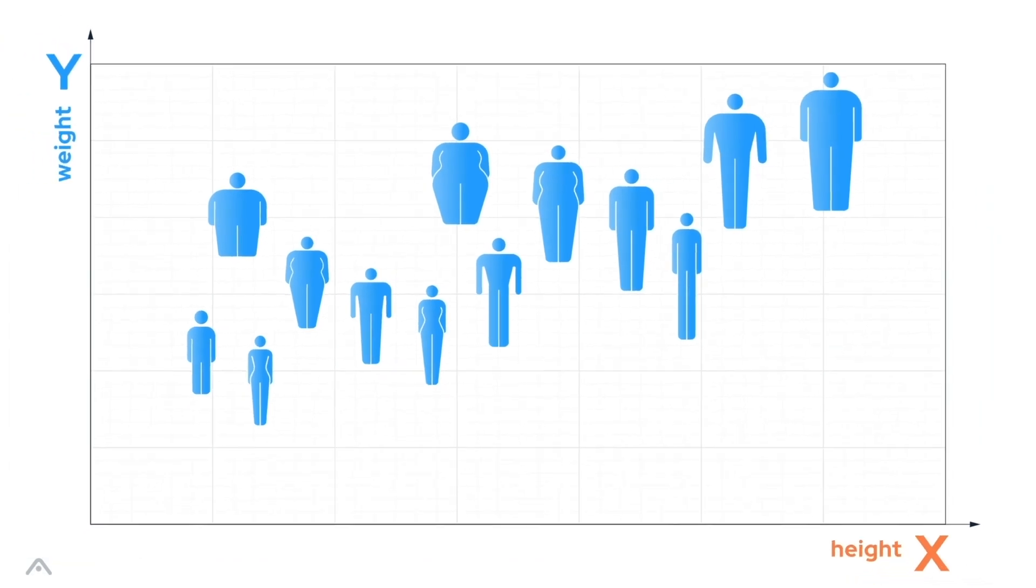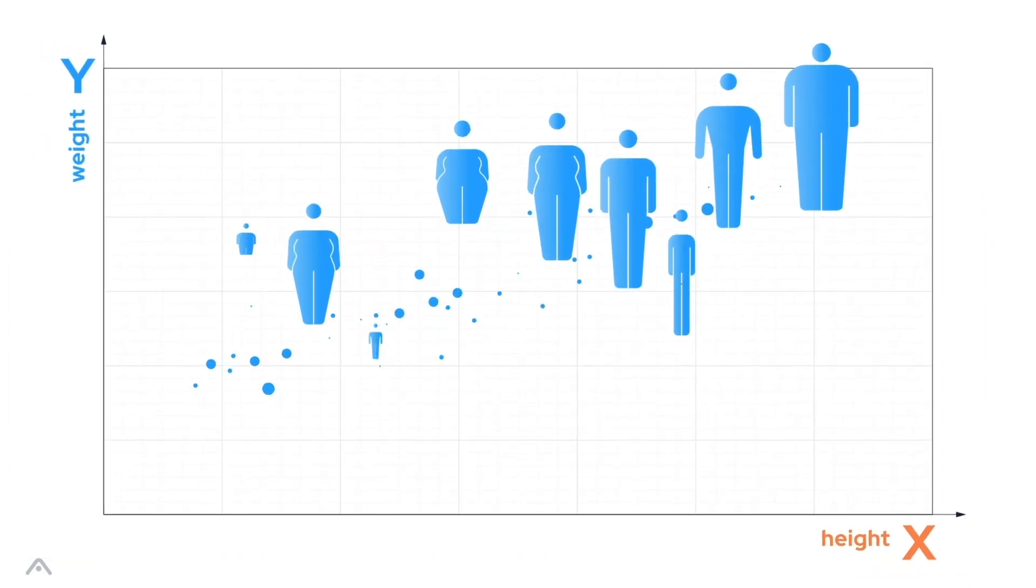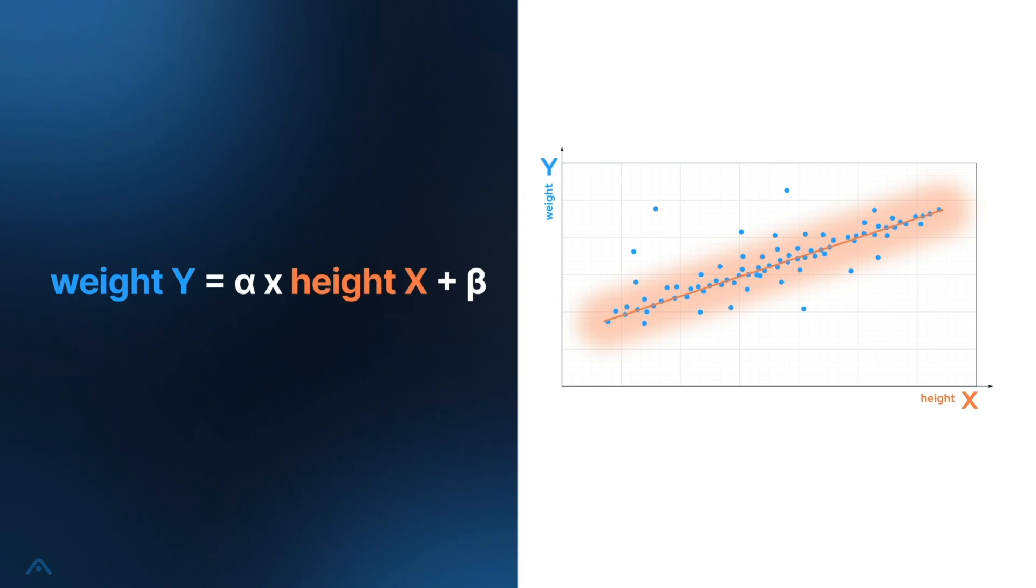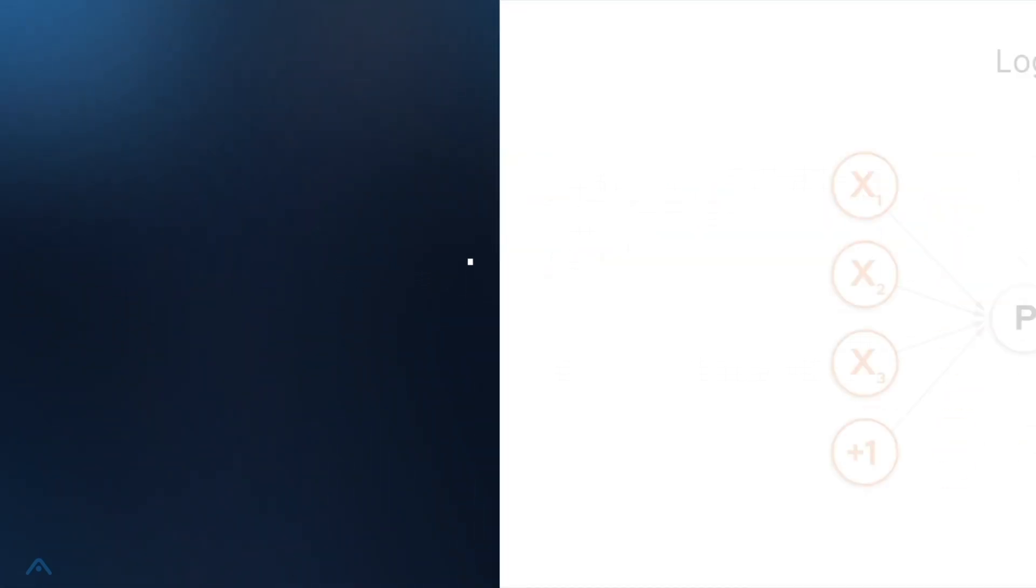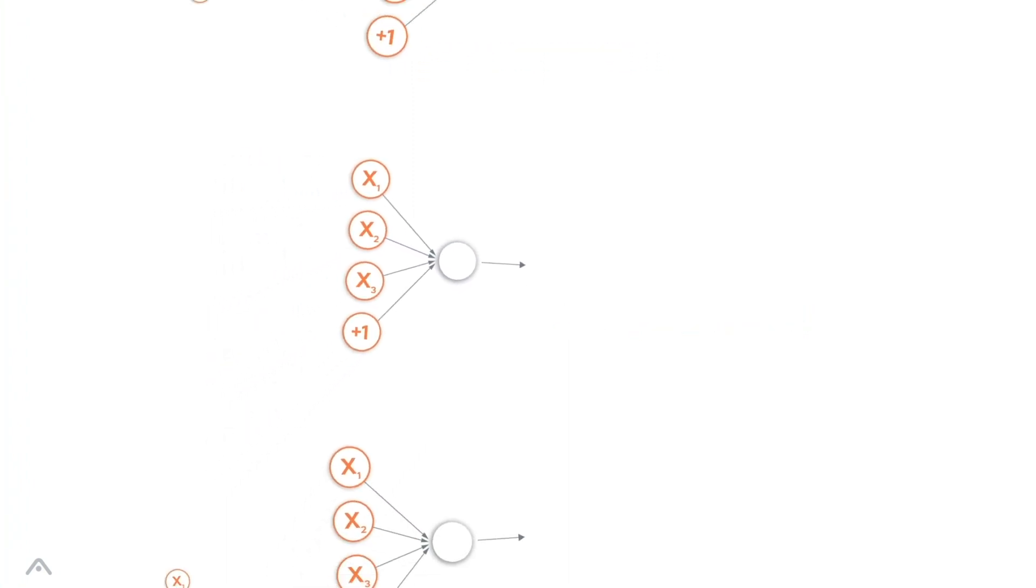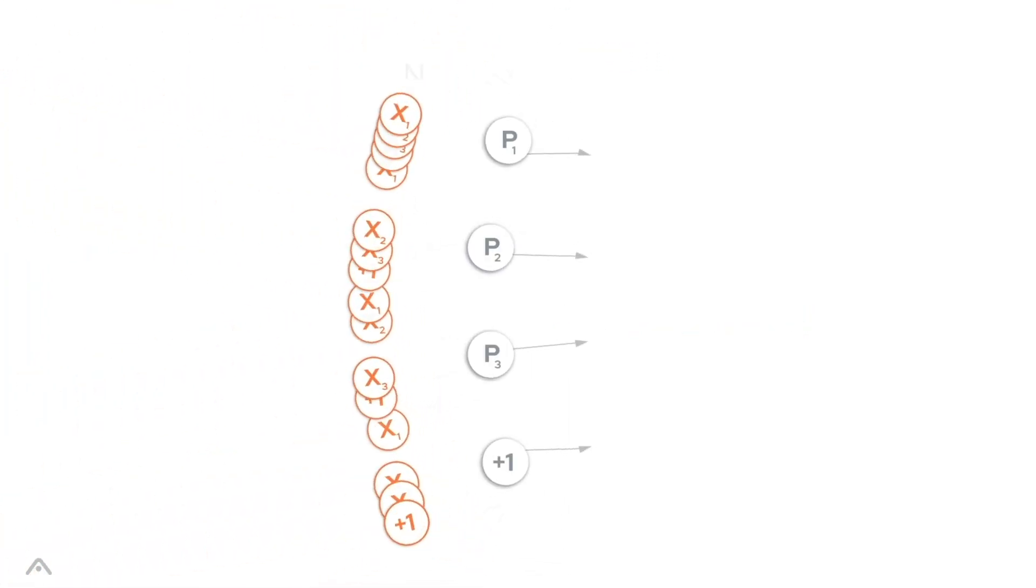If you ever calculated the linear regression in high school, you did the same. But you only used two parameters, say alpha and beta. You chose the best values for the parameters by looking at the differences between predicted and measured values. Neural networks do the same, but use millions of parameters instead of two.